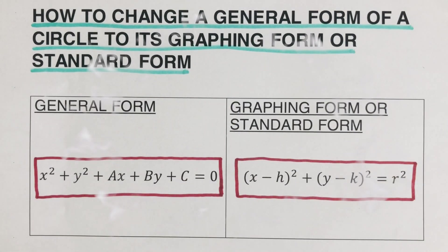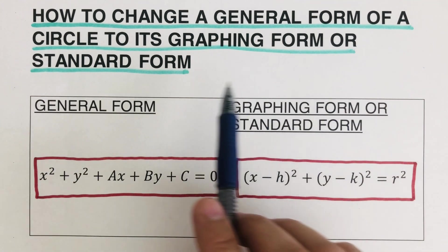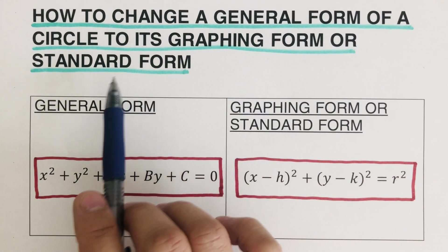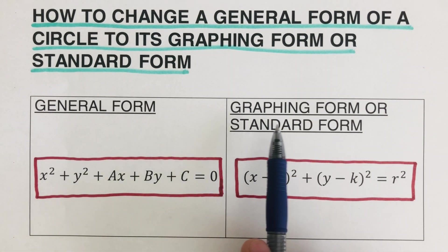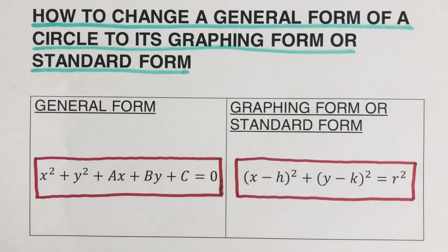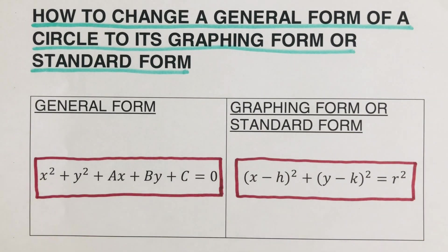Hello everyone. In this video we are going to change a general form of a circle to its graphing form or standard form by completing the square. These are the two equations of a circle — the general form and the graphing form or standard form. There are other videos that explain how we got these equations; I will put the links in the description box below.